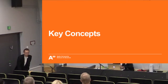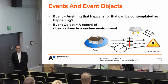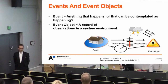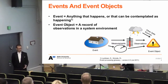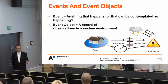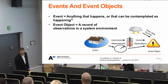I will walk you through some key concepts to understand the rest of the discussion. What I mean by an event is anything that happens or that can be contemplated as happening. An event object is a record of those observations in a system environment such as a computer. So if there is a flood, it can be measured by equipment, observed, and we can create an object in a computer telling us something about that real-world happening.